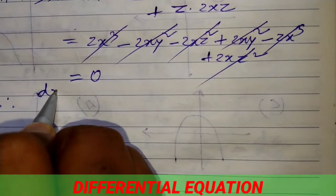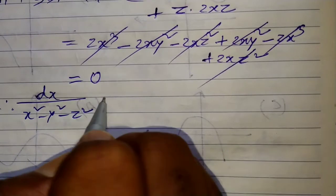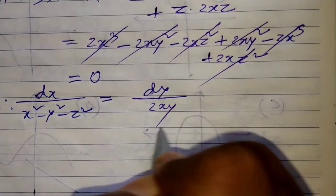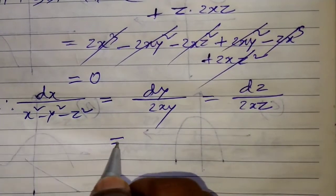So we can now write: dx/(x² - y² - z²) = dy/(2xy) = dz/(2xz) is equal to: